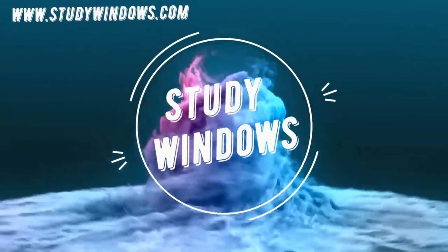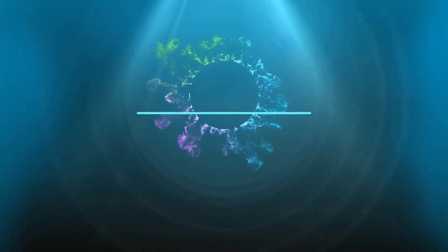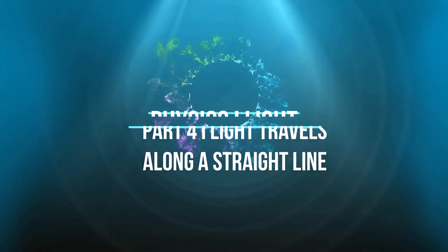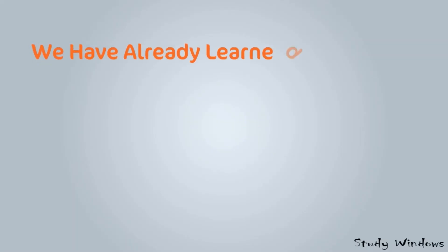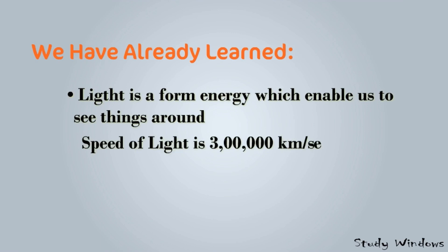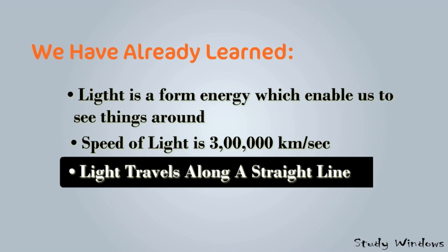Hi everyone, this is Fira and welcome to Study Windows. Today we are going to discuss a very small chapter: light travels along a straight line. We have already learned what is light — light is a form of energy which enables us to see things around us, and the speed of light is three lakh kilometers per second.